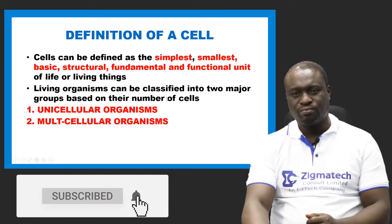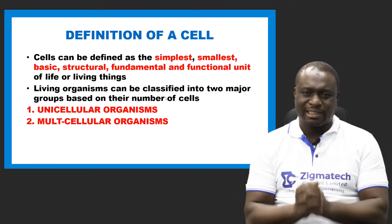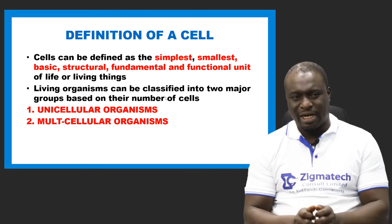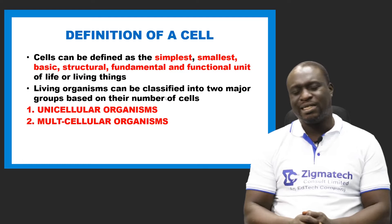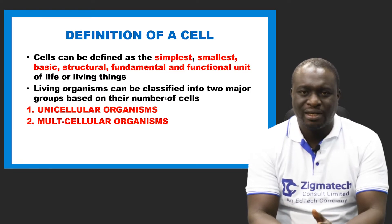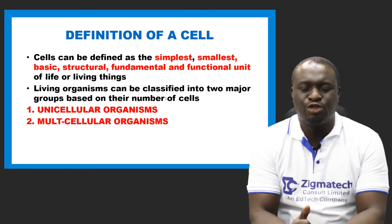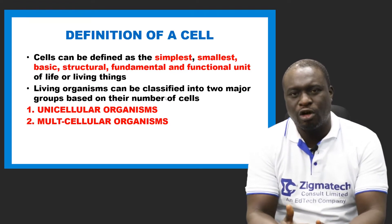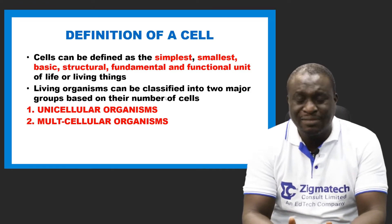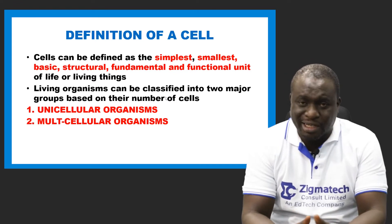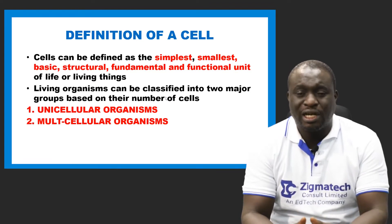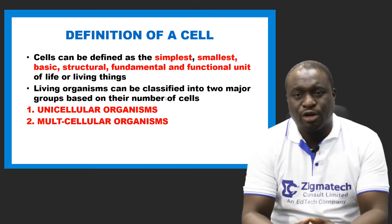Let's start with the definition of a cell. Please take note of the highlighted words colored in red. By definition, cells are the simplest, smallest, basic, structural, fundamental, or functional unit of life. Any of these keywords used in your definition of a cell is correct — you can say cells are the basic and structural unit of life, or the fundamental and functional unit of life.